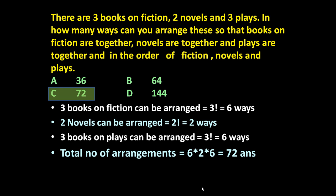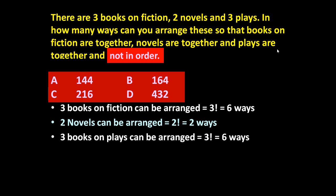So the answer is 72, option C. It's a very simple question. Now if we slightly change this question, maintaining the same concept. In the last line, if we say books on fiction are together, novels are together, and plays are together — but not in a fixed order. The first set may be novels, plays, or fiction. If that order can be changed, what will be the answer?